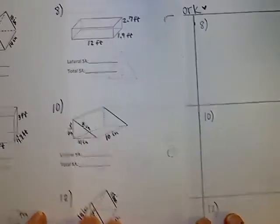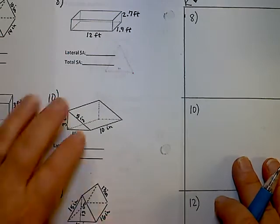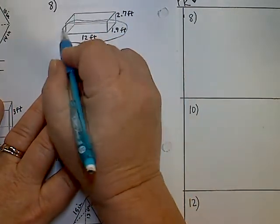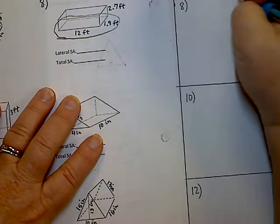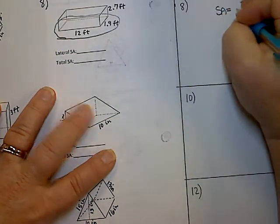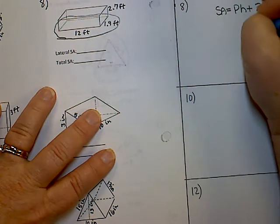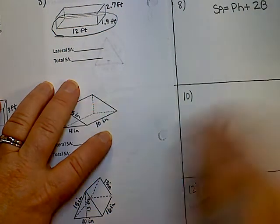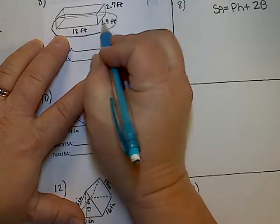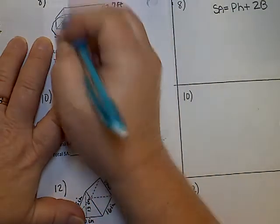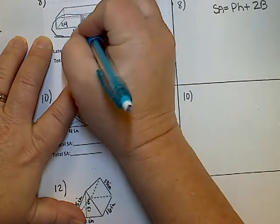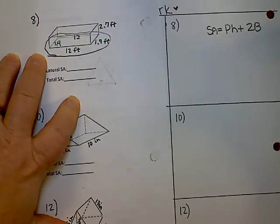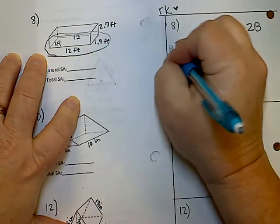Here I am. I am going to circle my base, which is what it is sitting on, okay? I'm going to write my formula. SA equals PH plus 2 big B, since both are prisms, okay? Then I'm going to write my number. If this is 1.9, this is 1.9. If this is 12, then this is 12. Because there is my base. It's sitting on it, remember? So I've got a P and a big B.